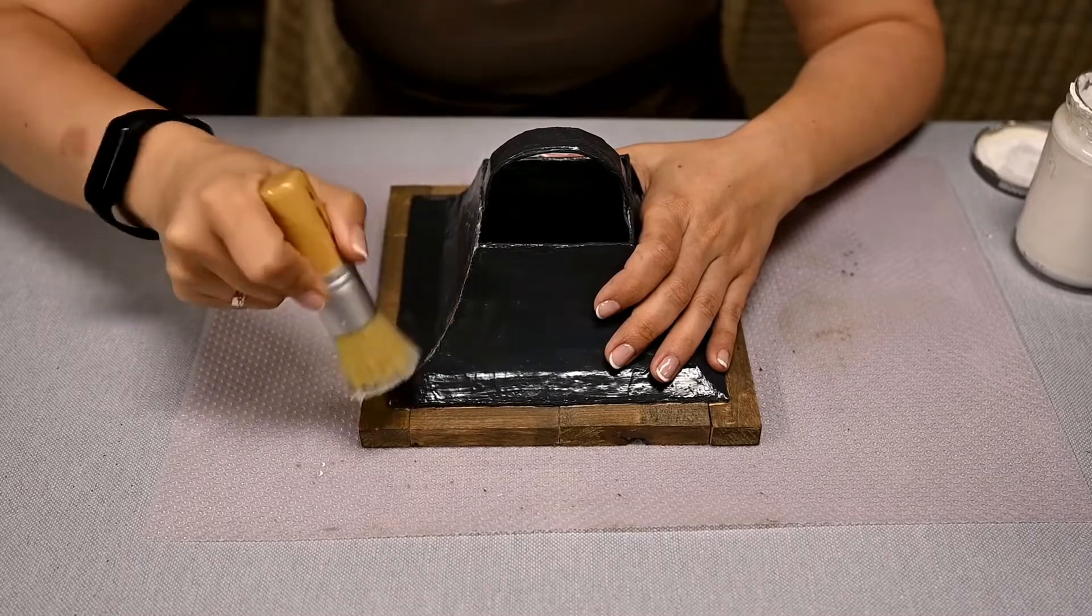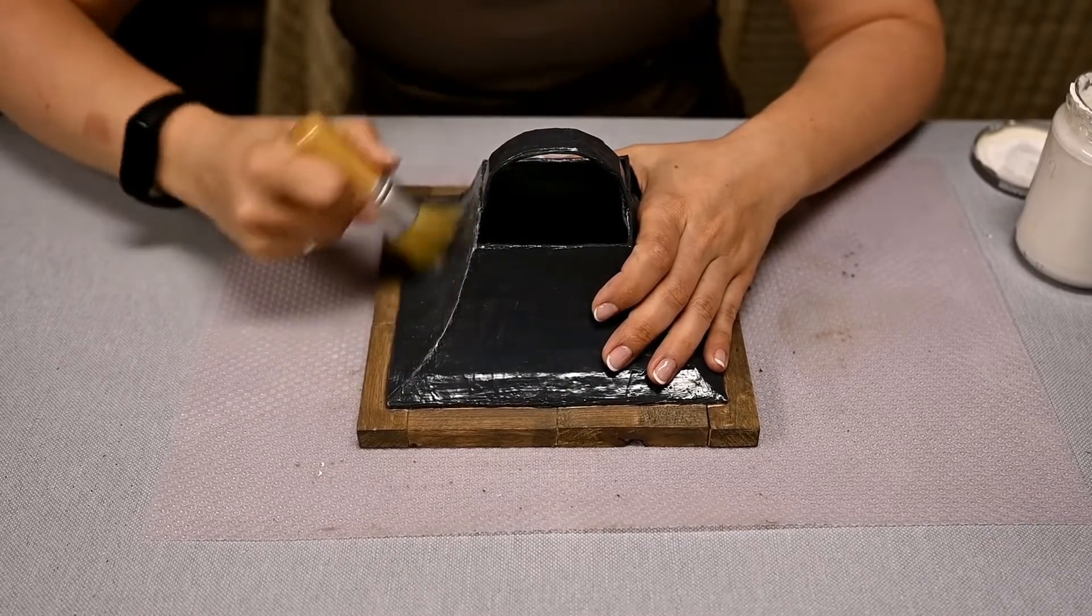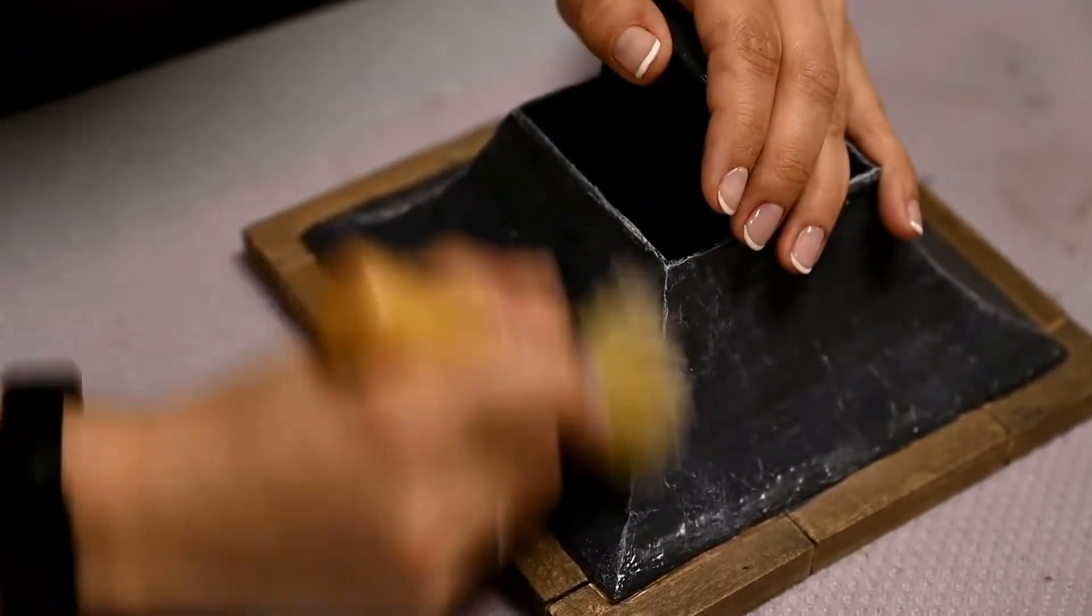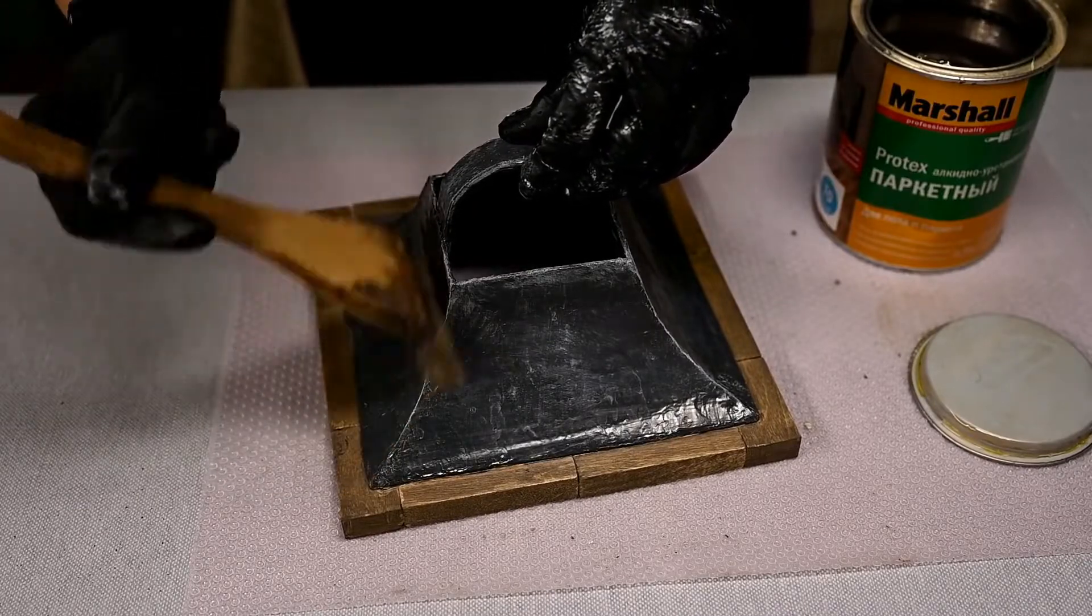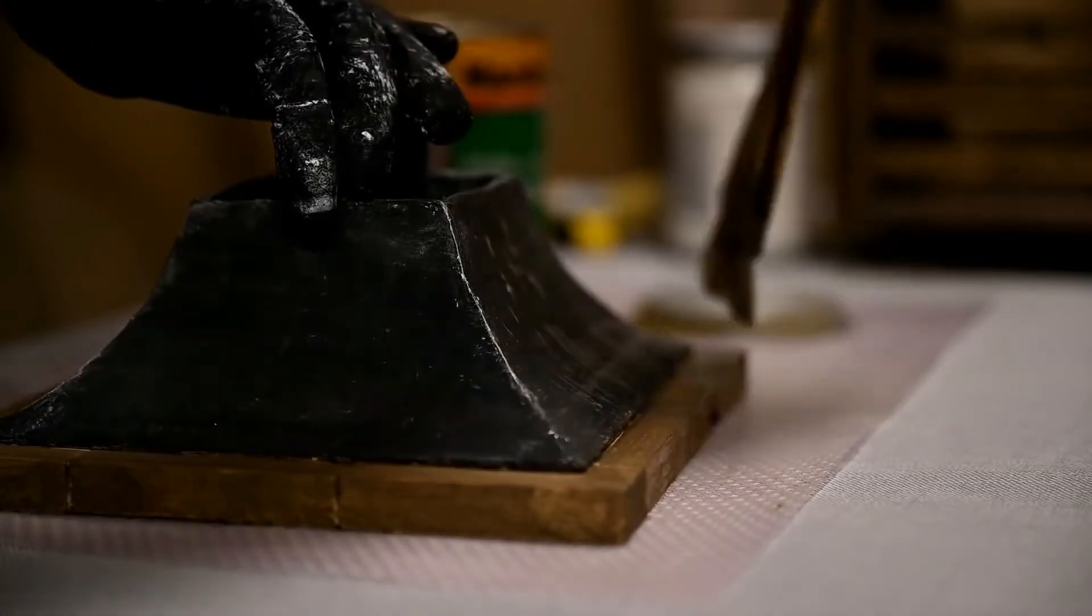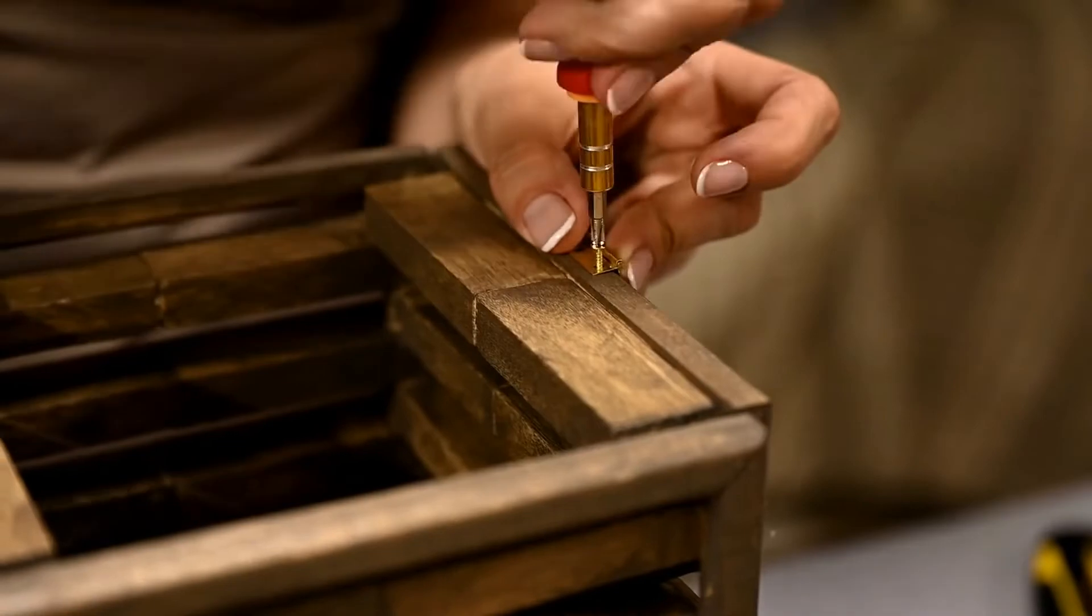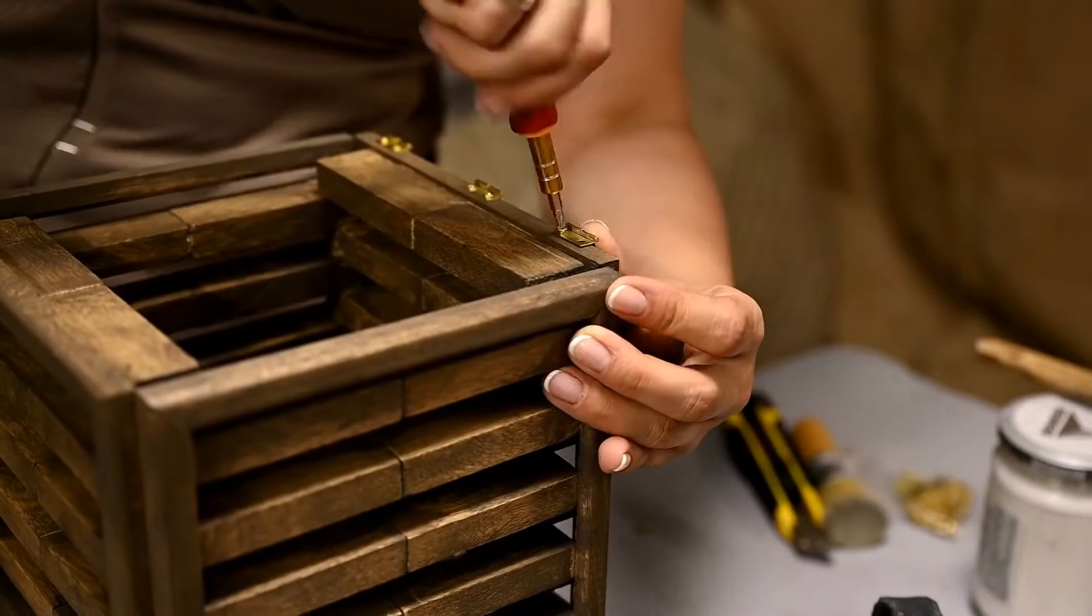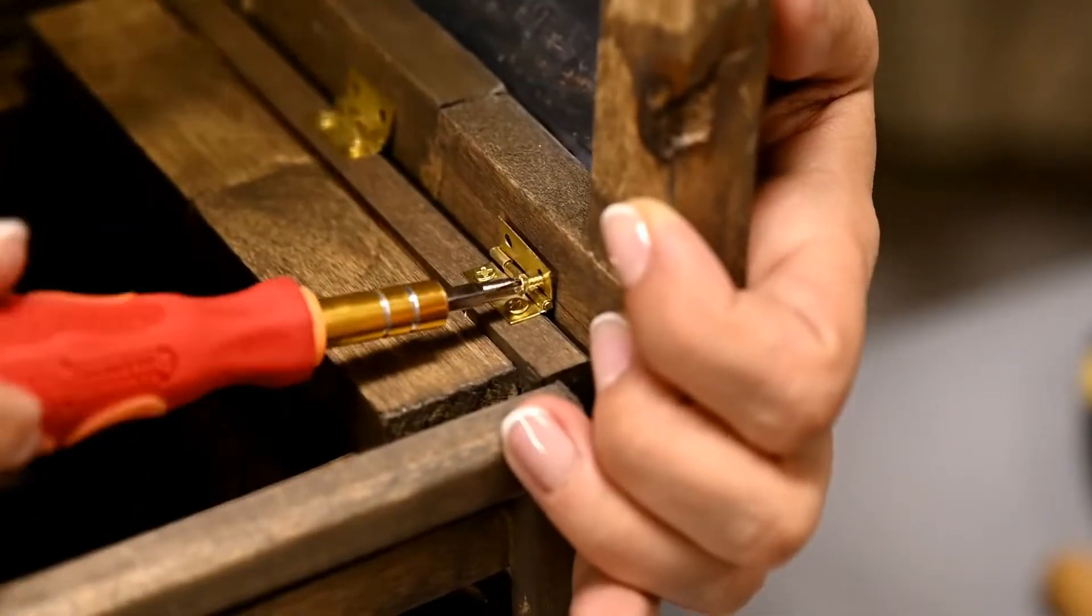After the paint dries well, I'm dry brushing the top with white to highlight the edges a bit and make the color more interesting. And finally, I'm sealing the lantern with a matte varnish. All that is left is to attach the small hinges for the top and you are done.